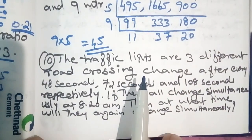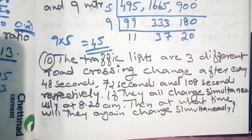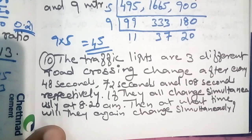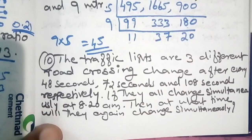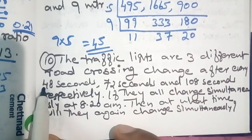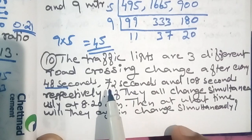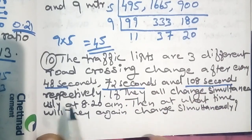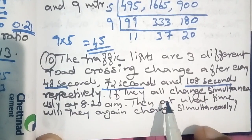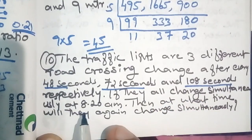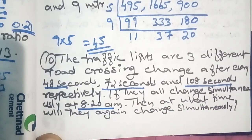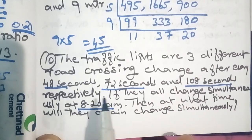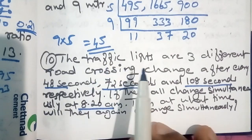The traffic lights at three different road crossings change after every 48 seconds, 72 seconds, and 108 seconds respectively. If they all change simultaneously at 8:20 am, then at what time will they again change simultaneously?